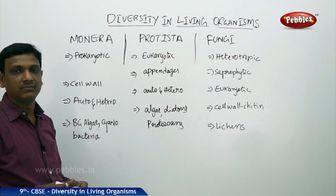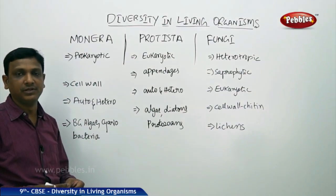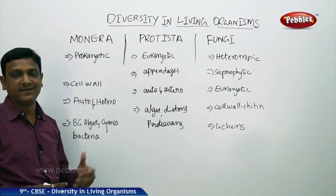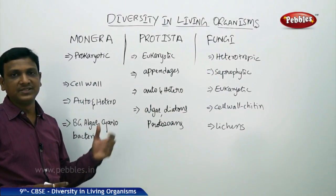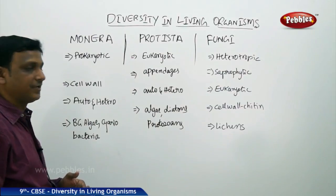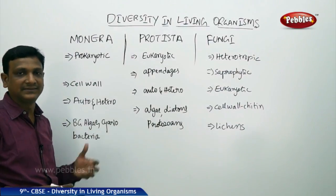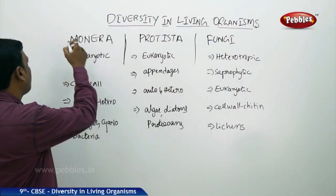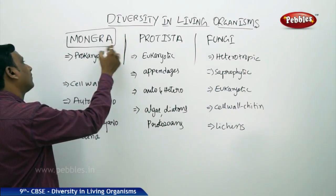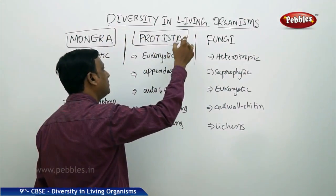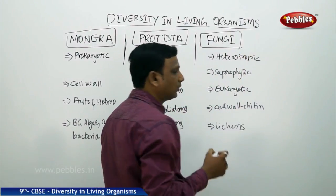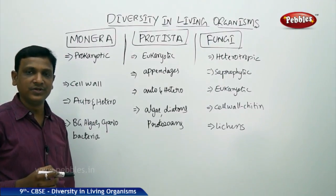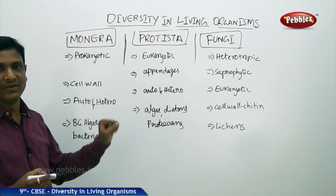We have seen the basis of classification and its relation to evolution, as well as the different kinds of classifications given by different people. Robert Whittaker has given the five-kingdom classification, which is the most accepted classification of organisms. It consists of five kingdoms: Monera, Protista, Fungi, Plantae, and Animalia — the five major kingdoms into which all living organisms fall.